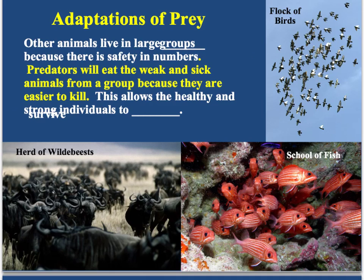A lot of prey will live in huge groups, like a large flock of birds, a herd of wildebeest, or a school of fish. Living in a group is an adaptation against predators because predators will target the weak and sick animals, leaving the healthy and strong ones alone since the weak animals are easier to kill. If I were a lion running down a herd of wildebeest, I'd just try to kill the slowest animal, so I don't have to chase a big, strong, fast one. This weeds out the pack.